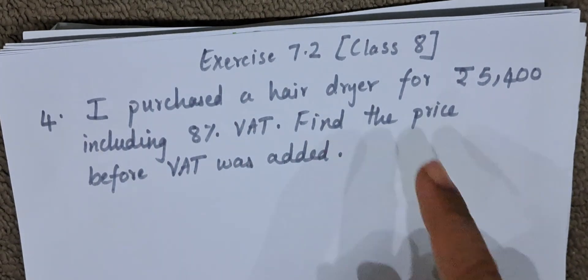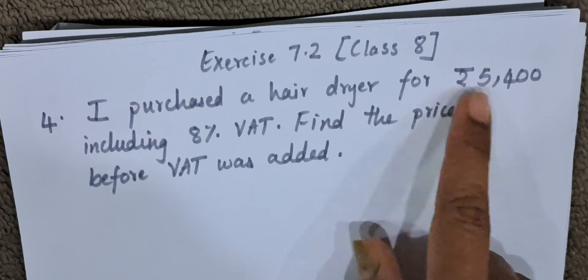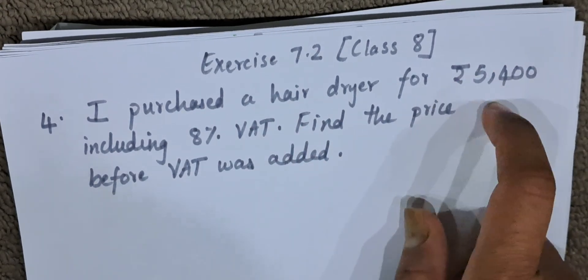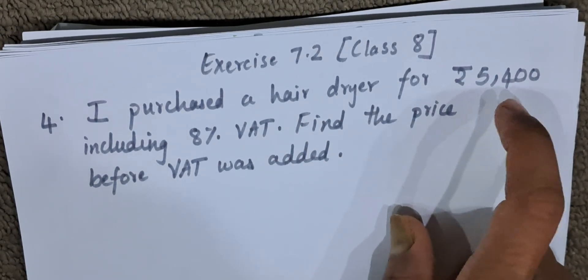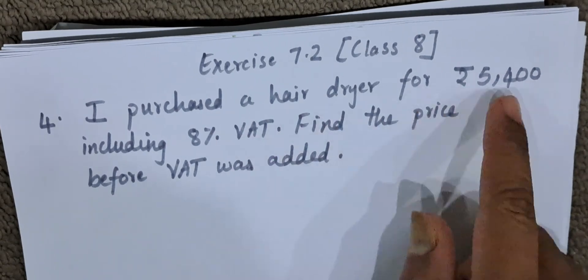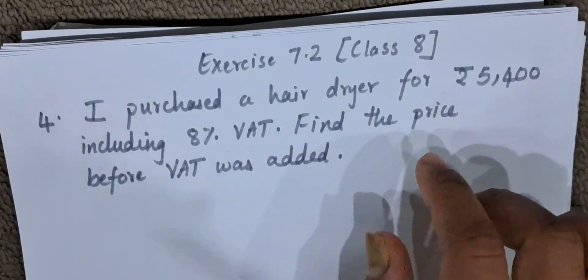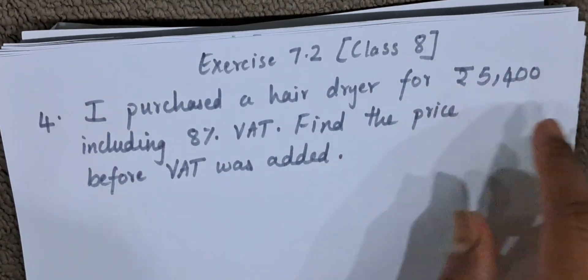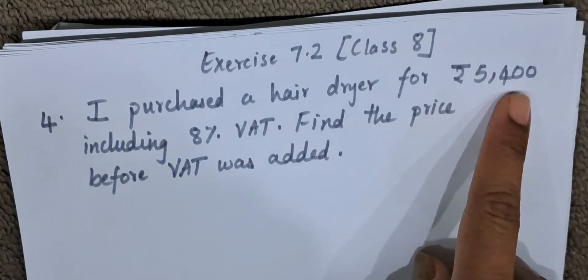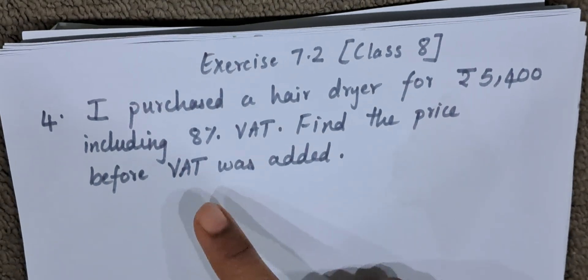Now here they are telling us that there is a hair dryer which I have purchased and it cost me 5,400. And it has 8% VAT. VAT means what? It has tax, tax of 8%.